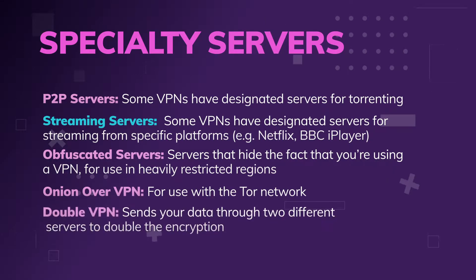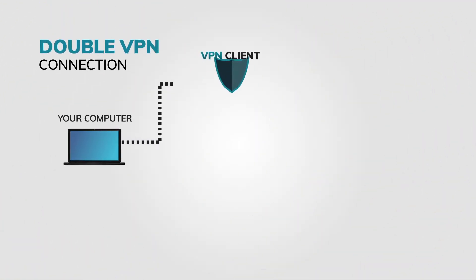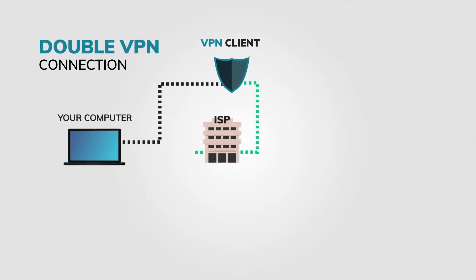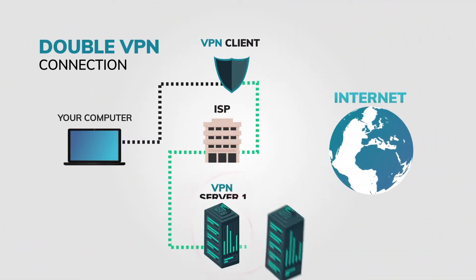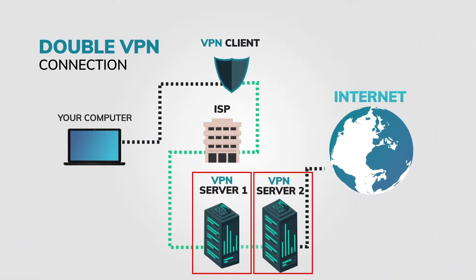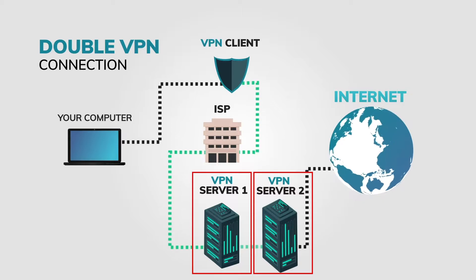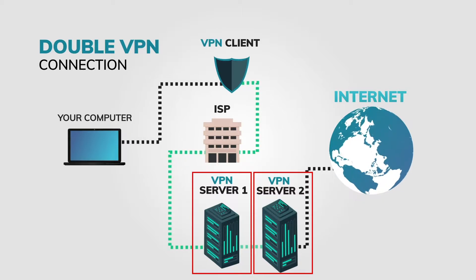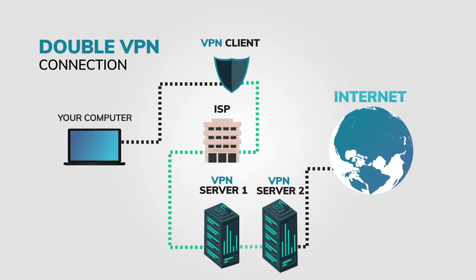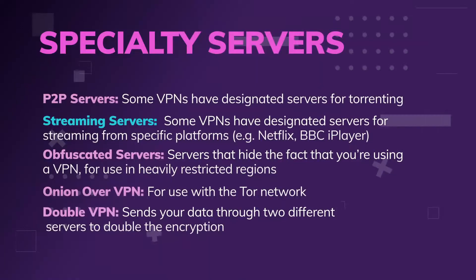Double VPN is a feature that sends your data through two different servers to double the encryption and double the anonymity in theory. Again, it heavily affects speed.